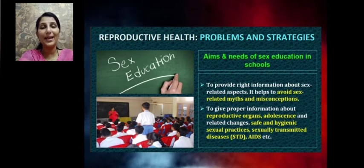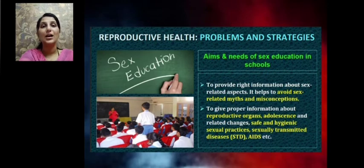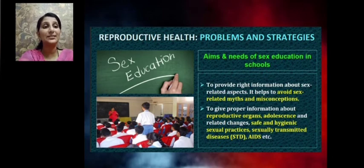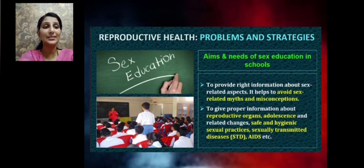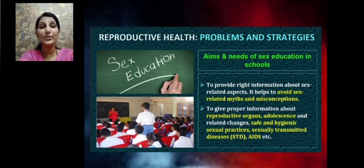Sex education plays a very important role for this age group because a large number of questions arise in the adolescent mind. A proper, clear-cut explanation has been shared through this chapter covering reproductive organs, changes during adolescence, safe and hygienic sexual practices, contraceptive methods to control population, and how sexually transmitted diseases can be controlled.